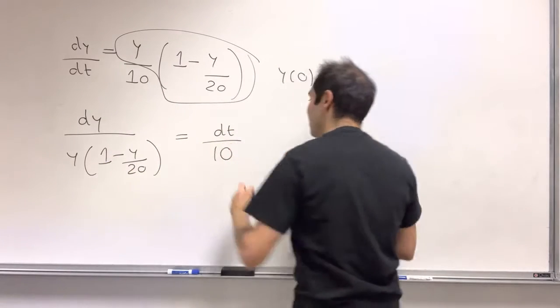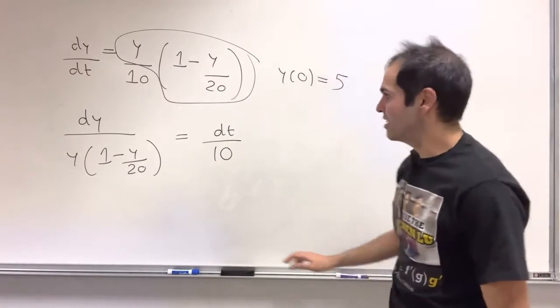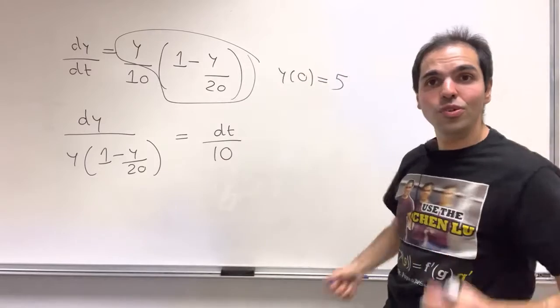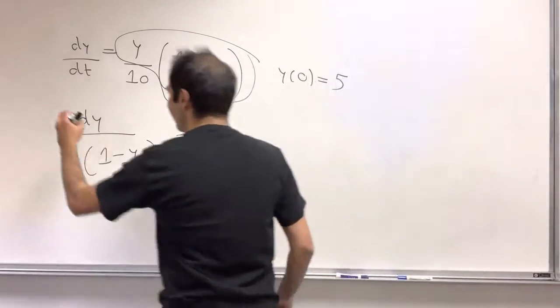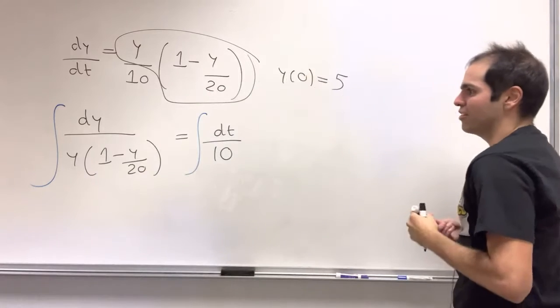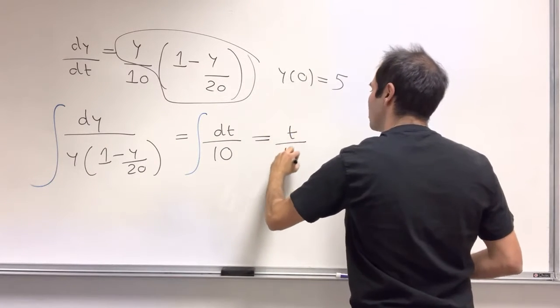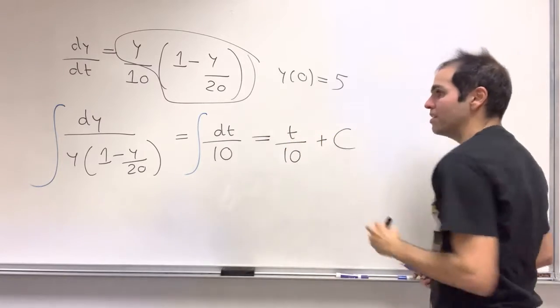Over 10. Putting the 10 here makes it a bit easier later, you'll see why. And then, as usual for this technique, we integrate. So integral of this equals integral of that. But the right hand side just becomes t over 10 plus a constant.